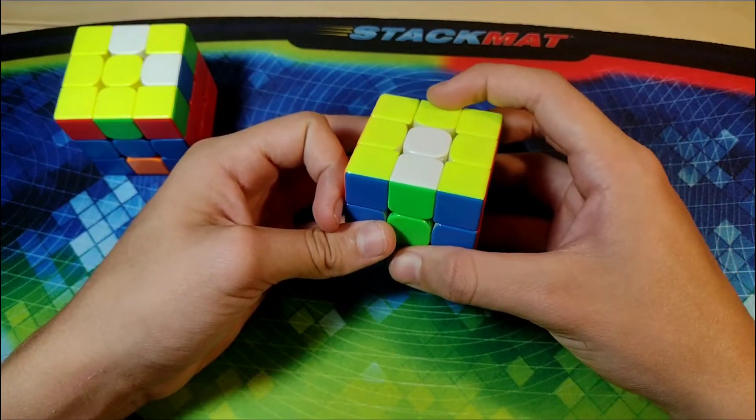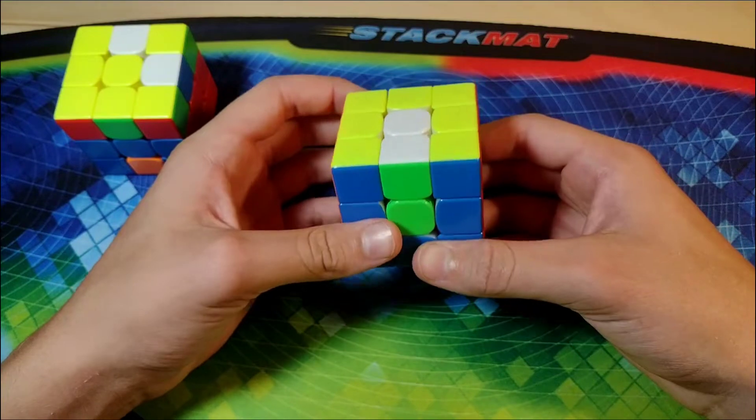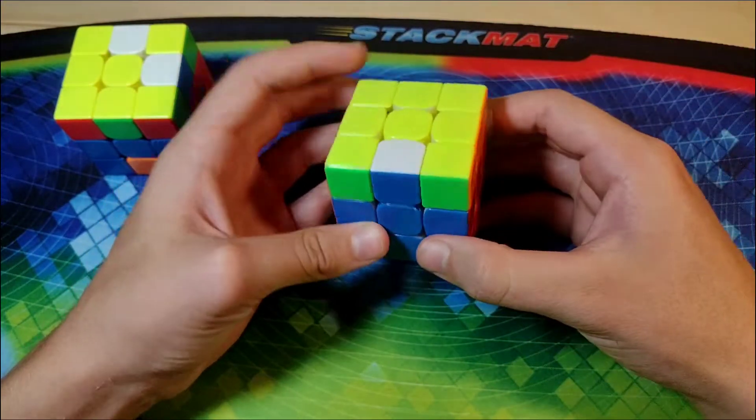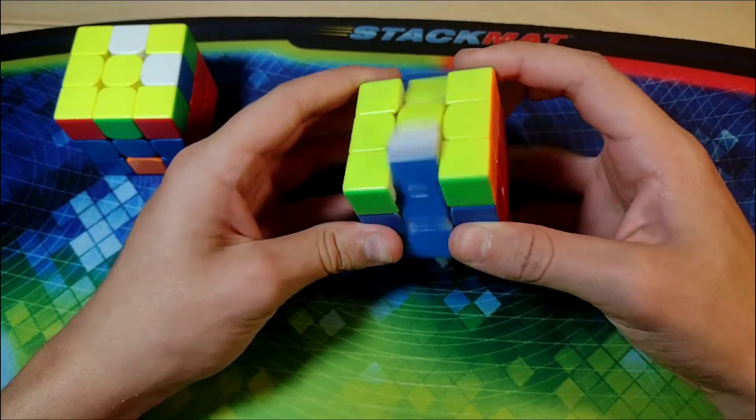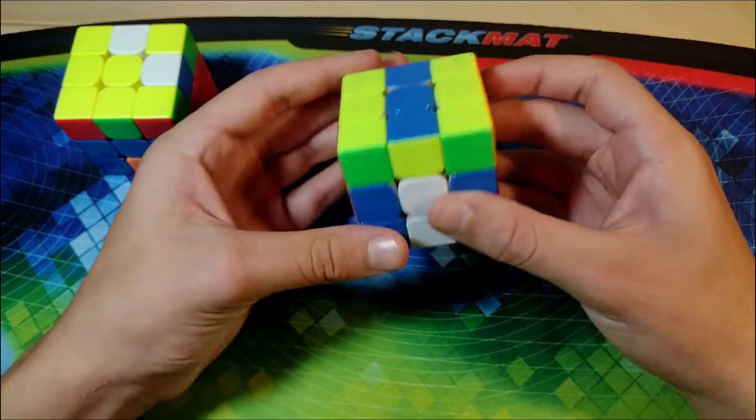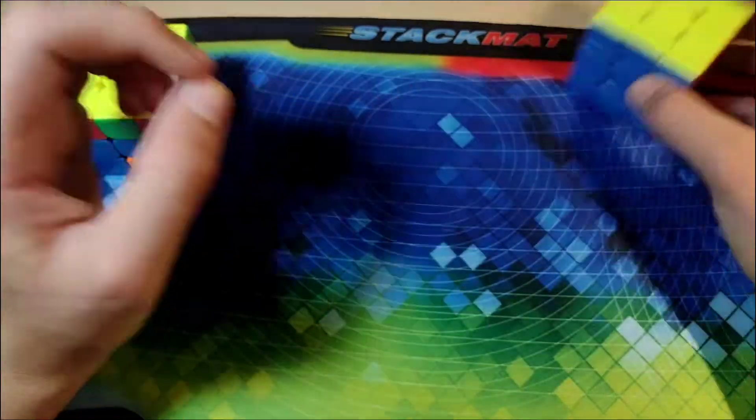And if it goes to the back, like this, then we're going to have to do an M2 and a U2 before we can raise the dot. And see here, when I raise the dot, it's going to be an M' that'll put these two in the bottom, and this one still in the top layer, and a U2, like so.